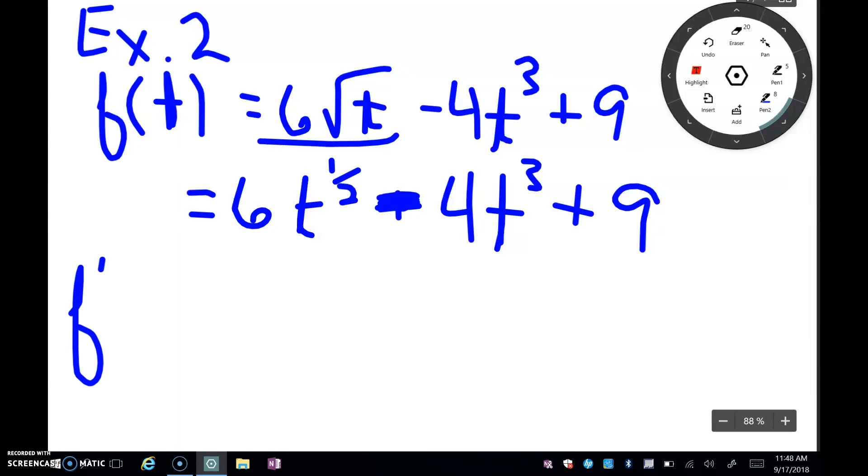So now I'm ready to do a derivative. So my derivative will be, remember, I'm going to do 6 times 1/2. So that makes that 3. And I'm going to do 1/2 minus 1. So that makes that negative 1/2. It's minus.